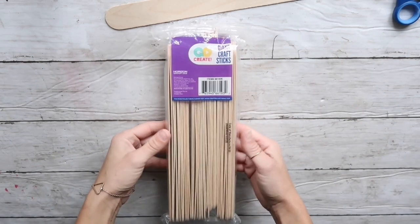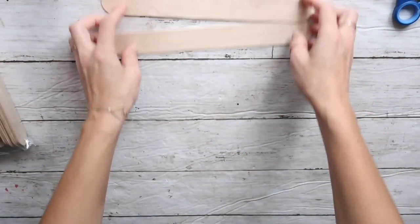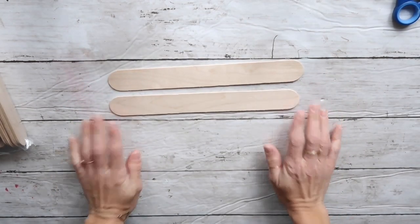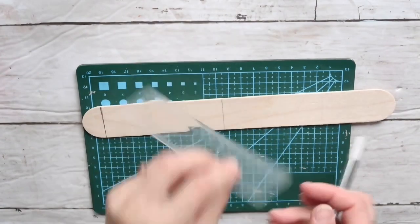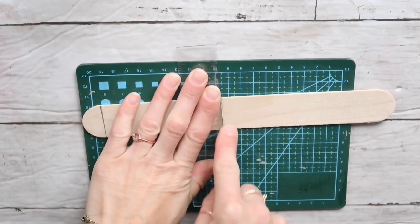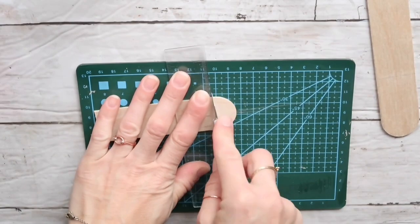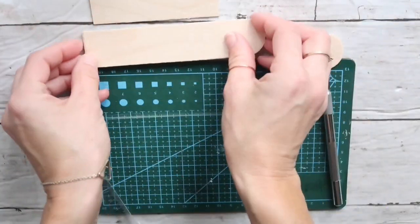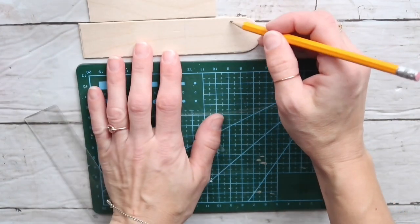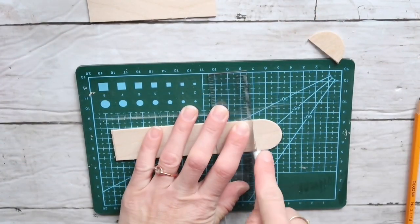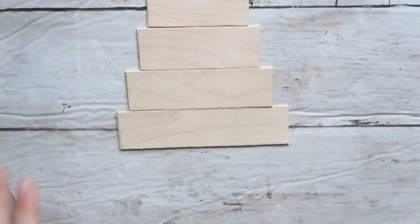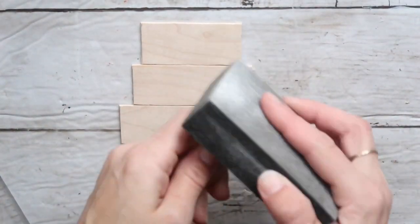For my third project, I'm using these huge craft sticks that came from Walmart. I'm going to use two of them. I'm going to cut out some rectangle shapes going from smallest to biggest - I need four of them. I'm using my exacto knife to cut them out. It's very simple - you just score a few times and it breaks easily. After I had all four of them, I'm going to take this sanding block that came from the dollar tree and sand the edges a little bit, making sure they're smooth.